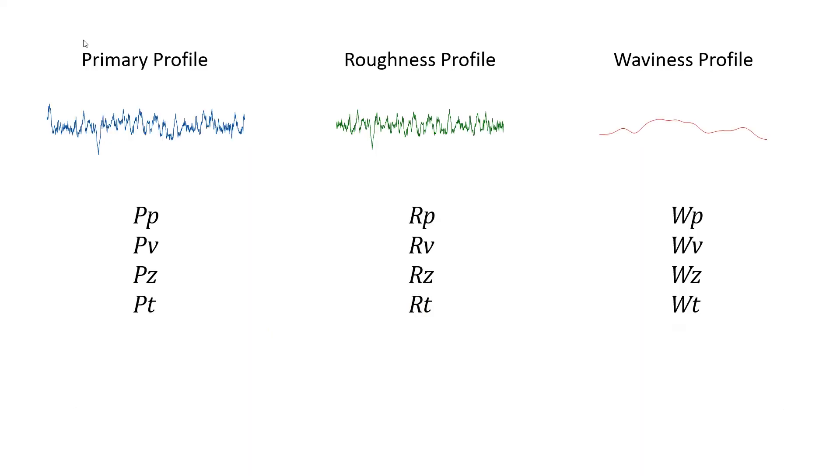So, we have four parameters that are applied on three profiles: primary, roughness and waviness. Which makes twelve parameters in total.